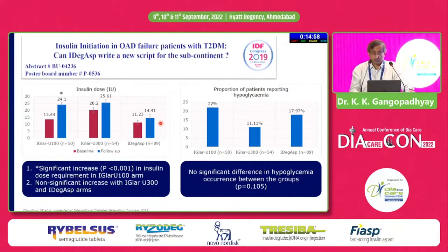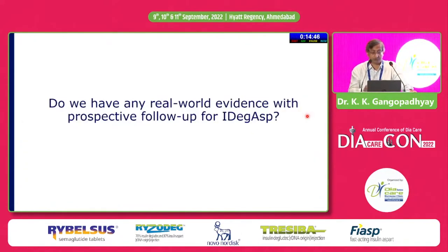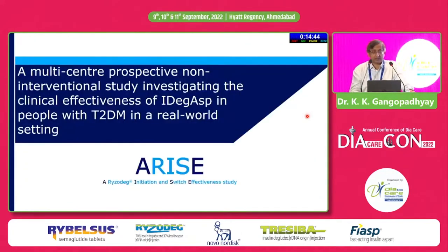The other thing is hypoglycemia — that seems to be in between U100 and U300. Mind you, if you add a rapid-acting insulin, one would expect slightly more hypoglycemia, but there wasn't. The ARISE study is one of the largest multicenter, multinational trials with IDegAsp.